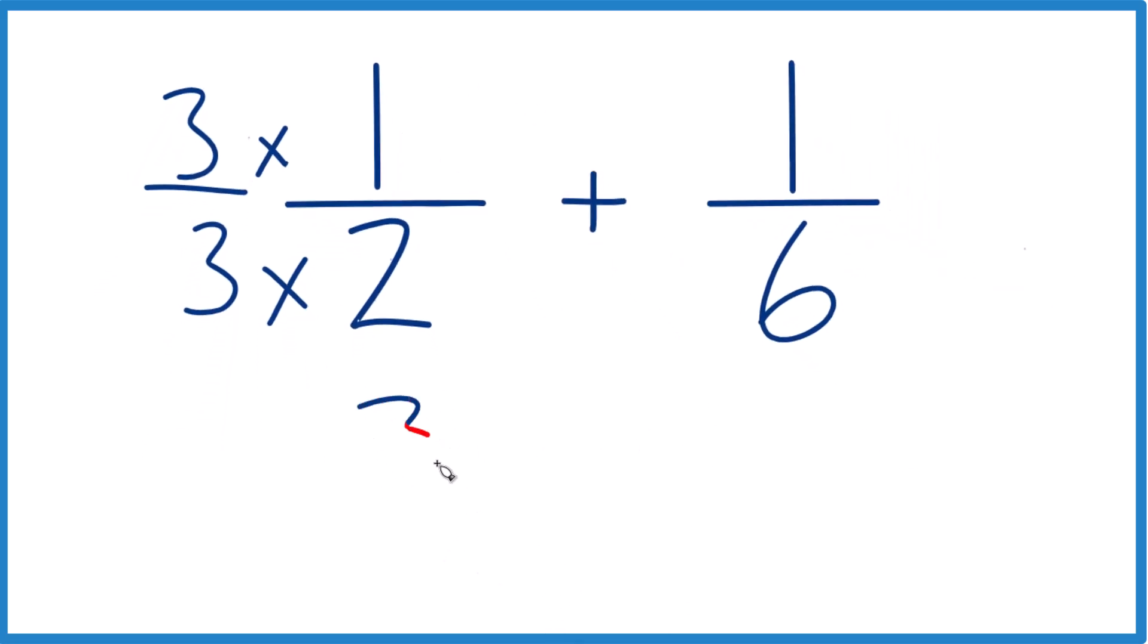Now, 3 times 1, that's 3. 3 times 2 is 6. And 3 sixths, that's the same as 1 half. They both equal 0.5. But now we have 6 for our denominator, and we have 1 sixth here. We don't need to change that.